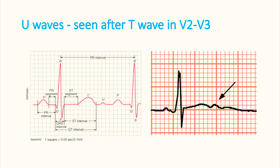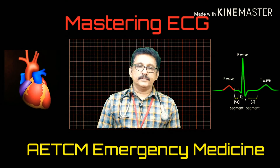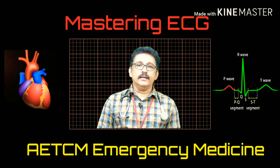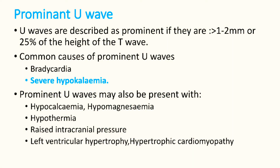In some conditions you can see very prominent U-waves. Common causes for prominent U-waves are bradycardia and severe hypokalemia. For example, if somebody is admitted with hypokalemic periodic paralysis and you take an ECG when the potassium is very low, the patient may have prominent U-waves.